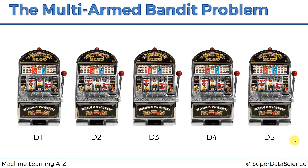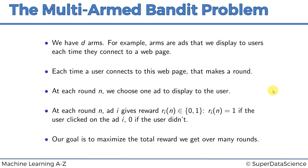There are lots of other modern problems very similar to the multi-armed bandit problem, so these algorithms are valid for them too. We've got d-arms; each time a user connects to the page, that is considered a round. At each round we choose which ad to display, and the ad gives us a reward — either 0 or 1: 1 if the ad is clicked, 0 if not. In the case of actual bandits, it'll be a monetary reward. Our goal is to maximize the total reward we get over many rounds.